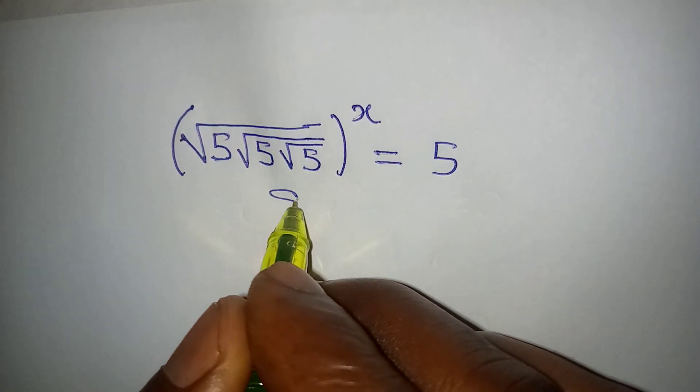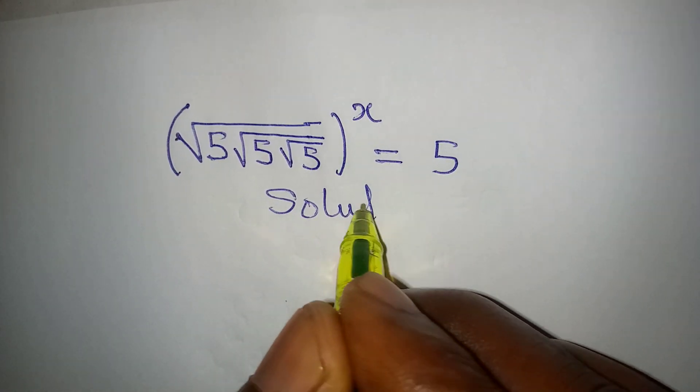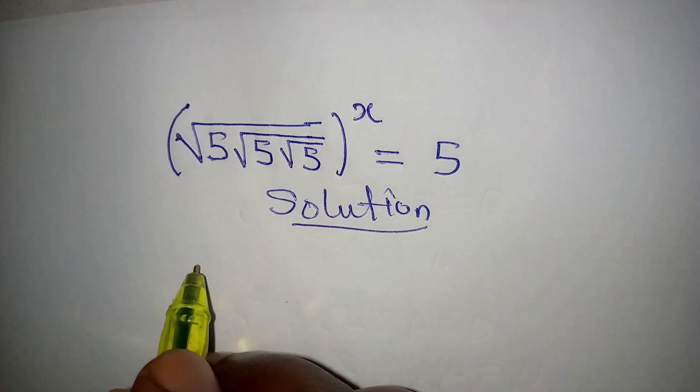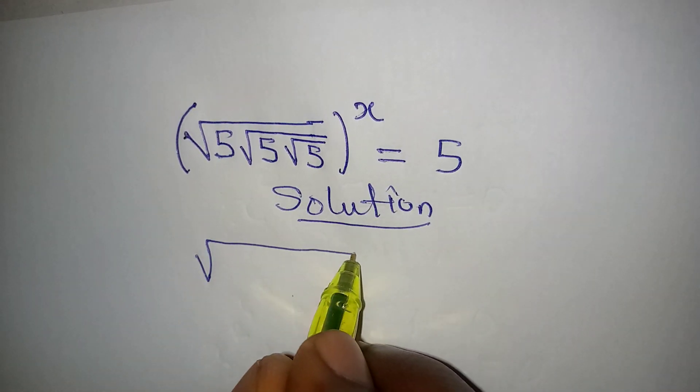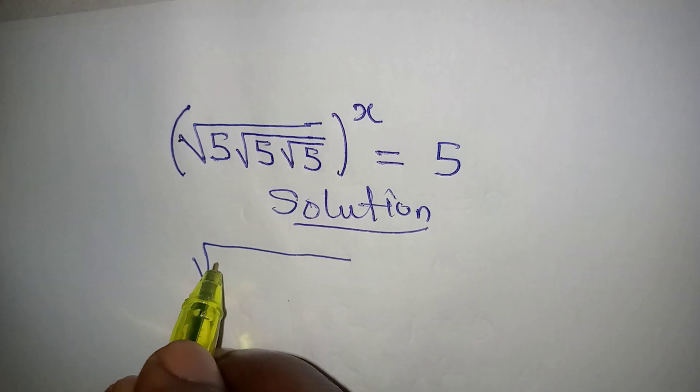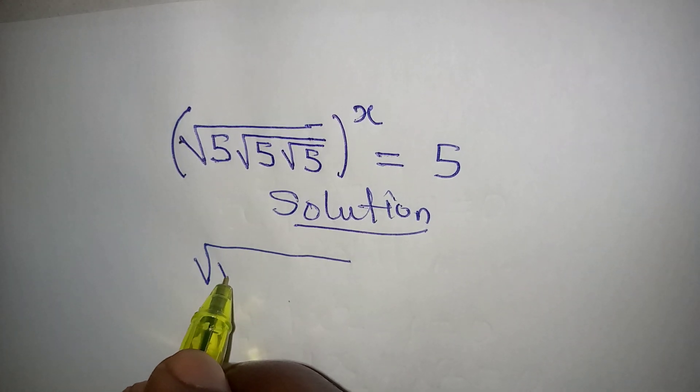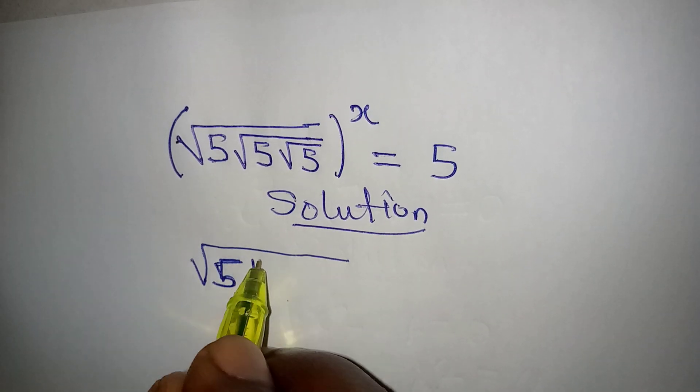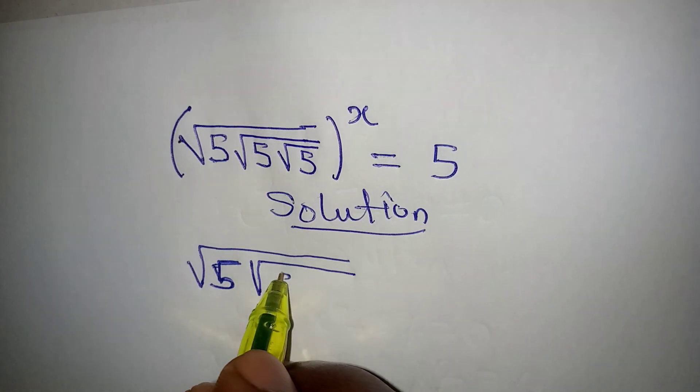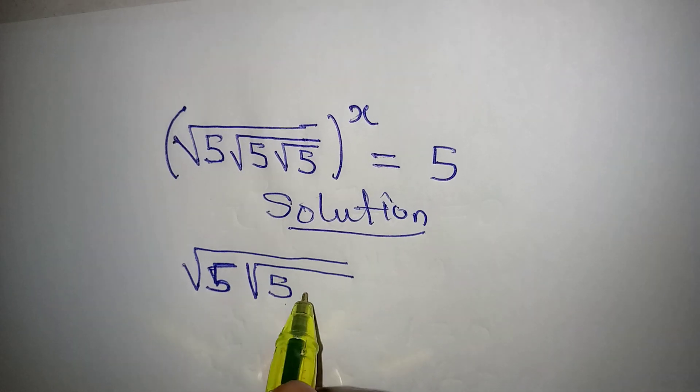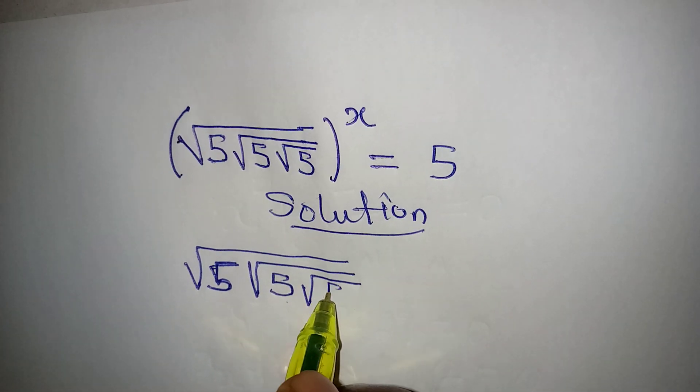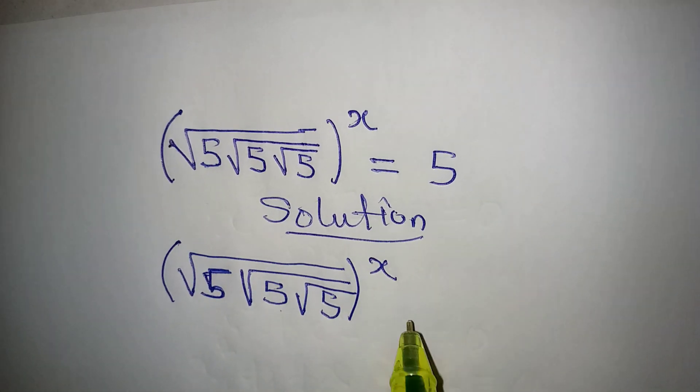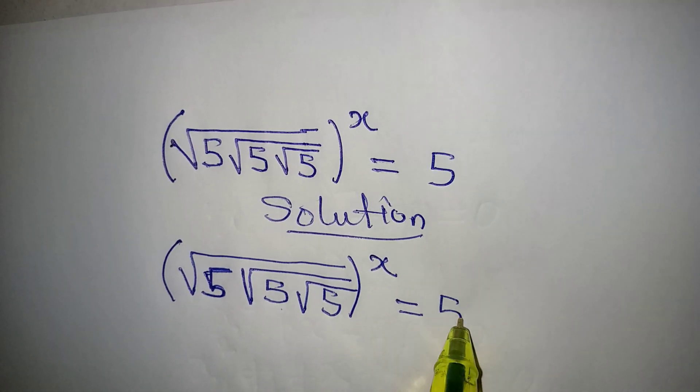Hello everyone, let's deal with this problem right away. We are looking for the value of x. We have 5, then we have another square root, we have 5 in there, we have another square root, we have 5. The whole of this is to the power of x and it is equal to 5.